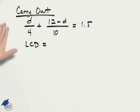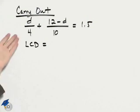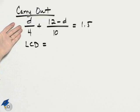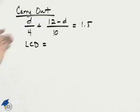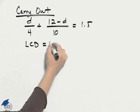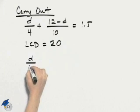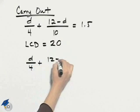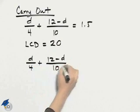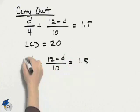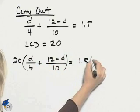The second step to this problem is to carry out. We have an equation here that we need to solve and we notice that we have fractions, so we will multiply each side by the least common denominator. Now the least common denominator in this case is 20, so I will rewrite my equation as it was given and multiply both sides by 20.